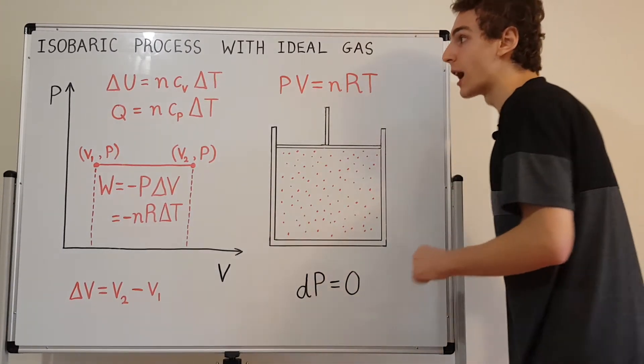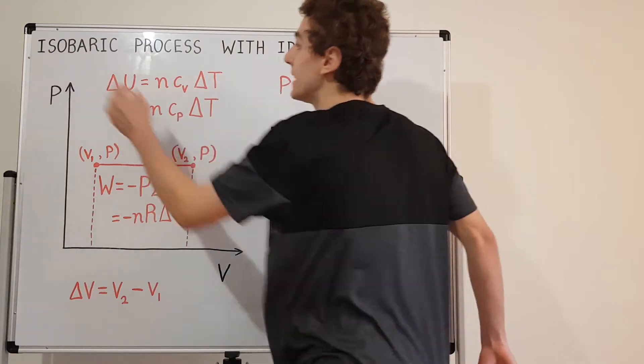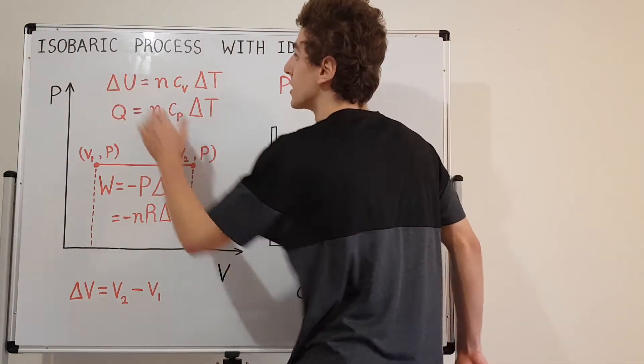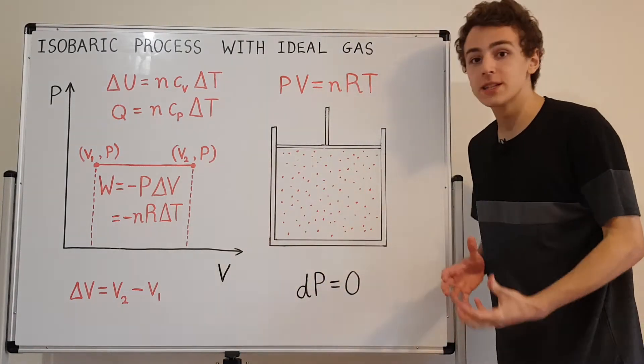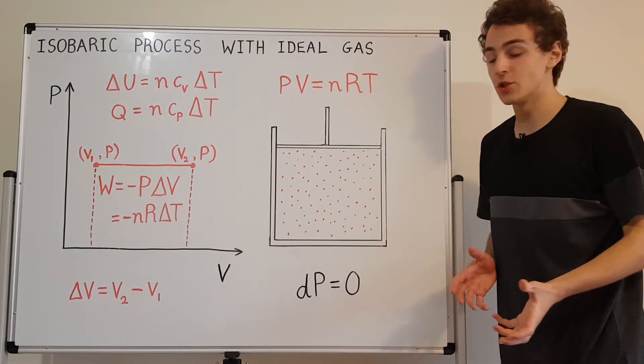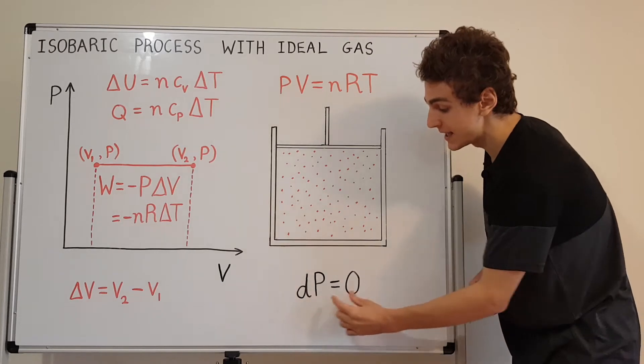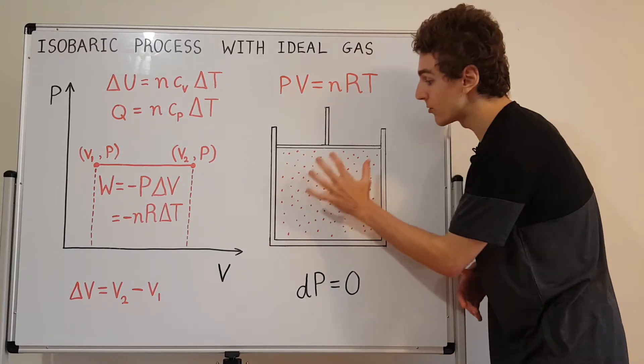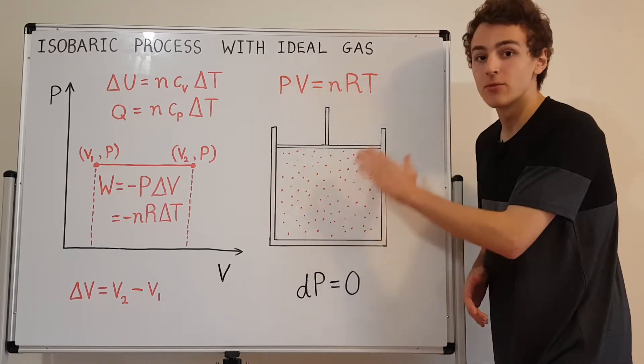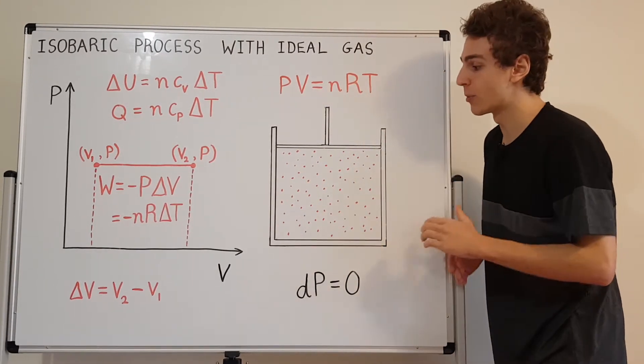So let's break down the word isobaric. Iso means same and bar means pressure. So isobar or isobaric, that's referring to a constant pressure process. So the change in pressure, the dP, is actually equal to zero. There are no changes in the pressure. The pressure of this gas is the same for the entire duration of the isobaric process.